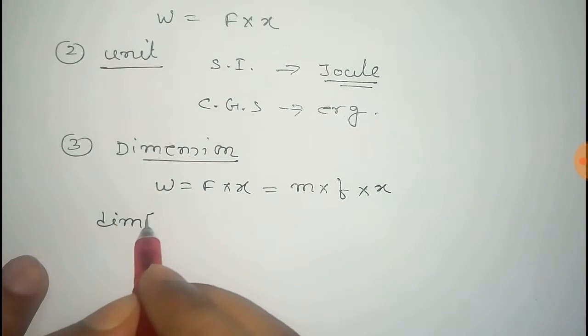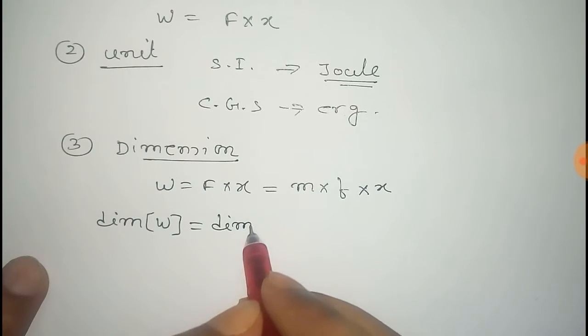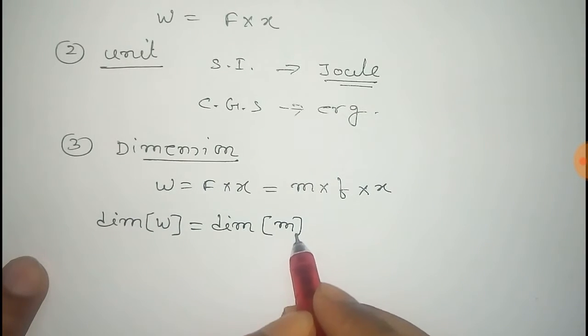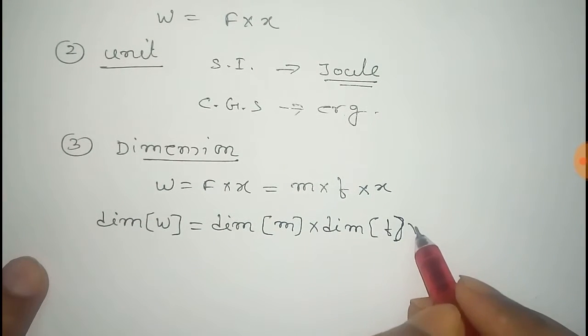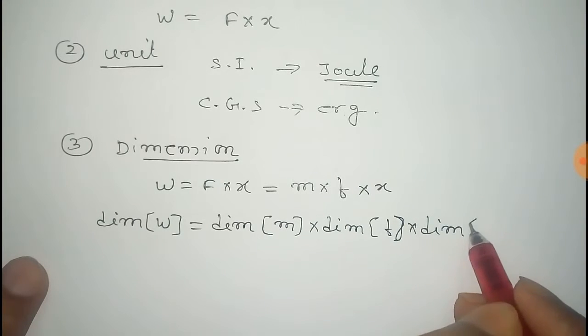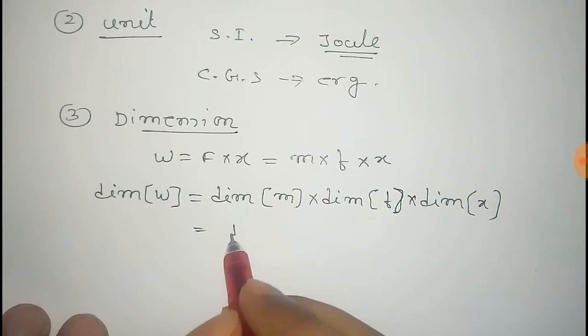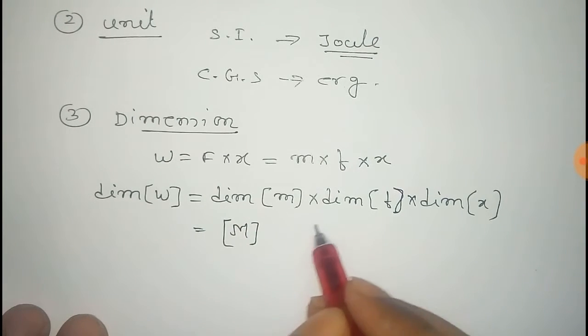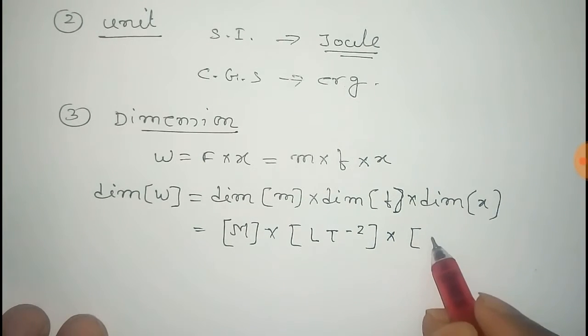Dimension of work equals dimension of mass into dimension of acceleration into dimension of displacement X. Dimension of mass is M, dimension of acceleration is L T to the power minus 2, and dimension of X is L.